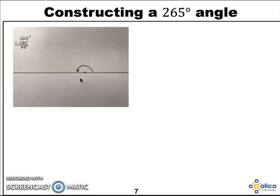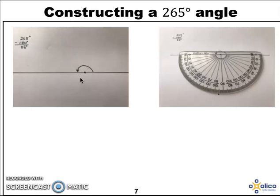So to do that, I place my protractor upside down. I've already got the 180 degrees over there and now I want some more. I need to go 85 more. Notice I'm still using the inside numbers to go to 85.